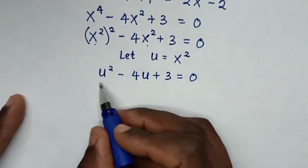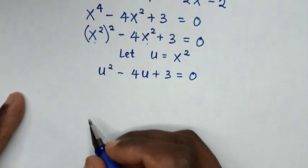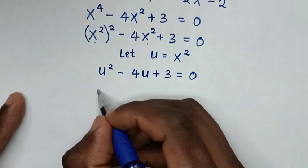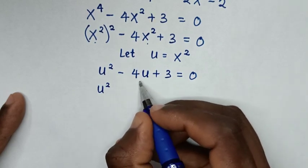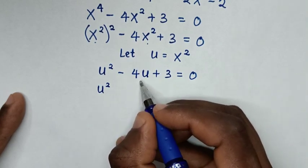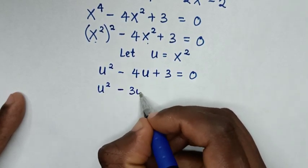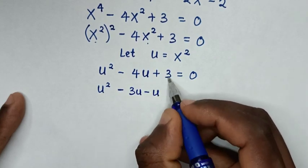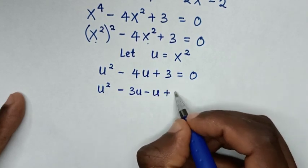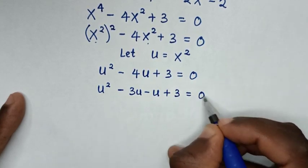We solve this quadratic equation by factorization. So u² - 4u becomes u² - 3u - u + 3 = 0.